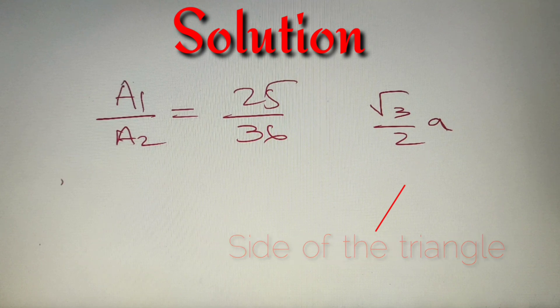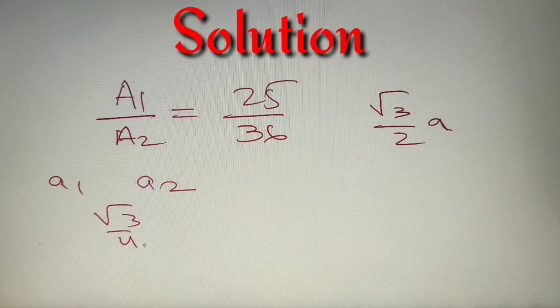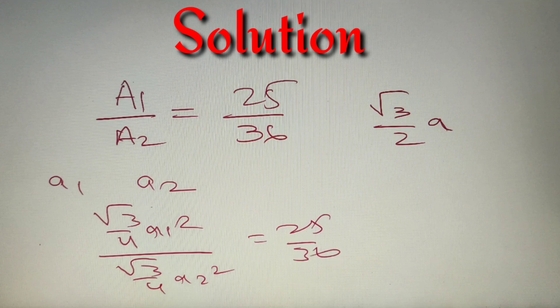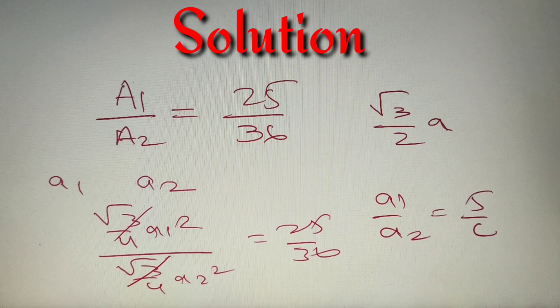So let's take the side of the equilateral triangle as a1 and a2 respectively. So we'll get that root 3 by 4 a1 square whole divided by root 3 by 4 a2 square is equal to 25 by 36. Now root 3 by 4 and root 3 by 4 will get cancelled and we'll get a1 by a2 as 5 by 6.